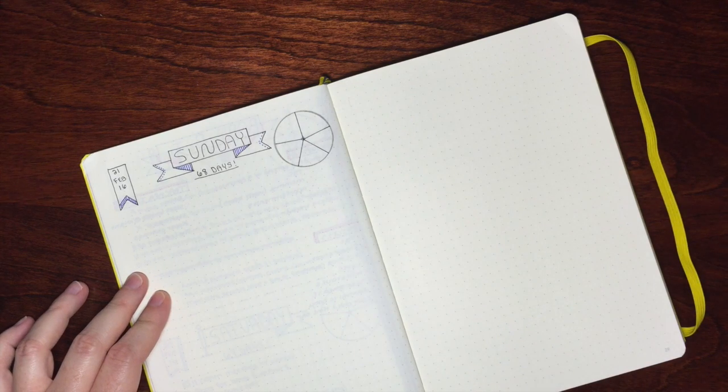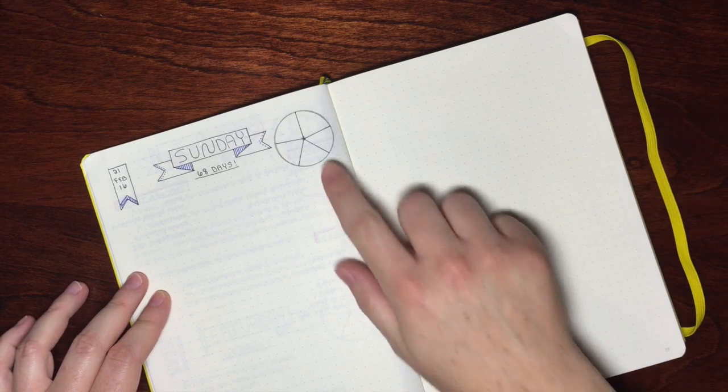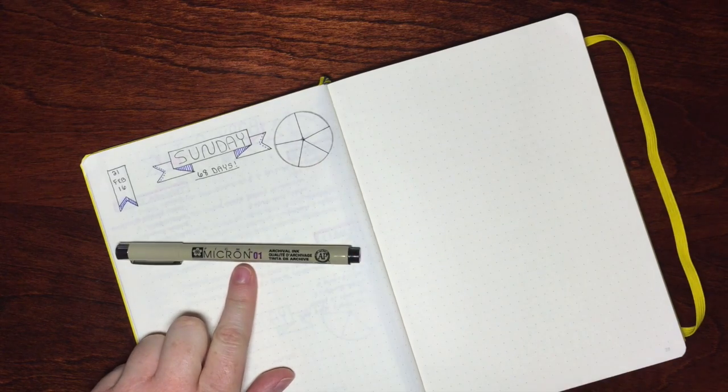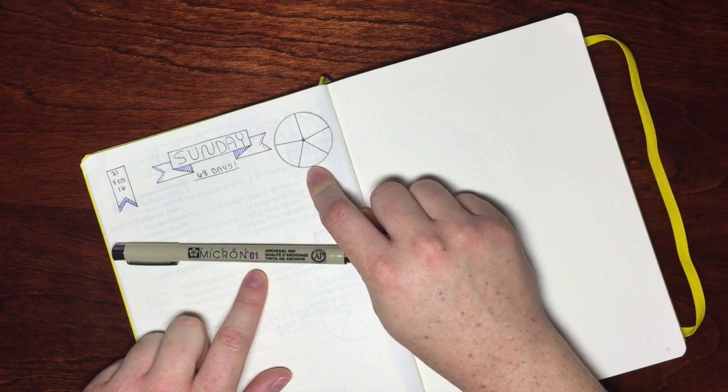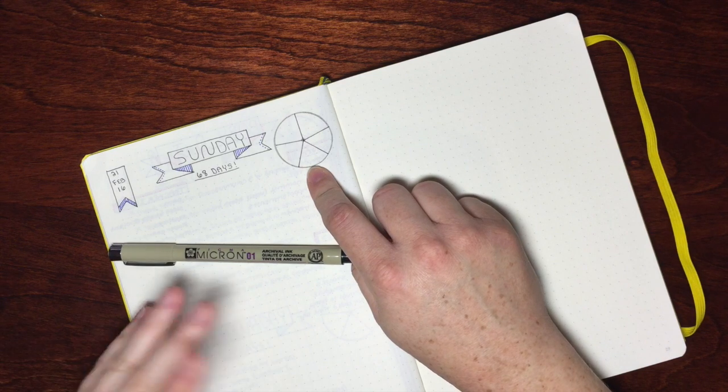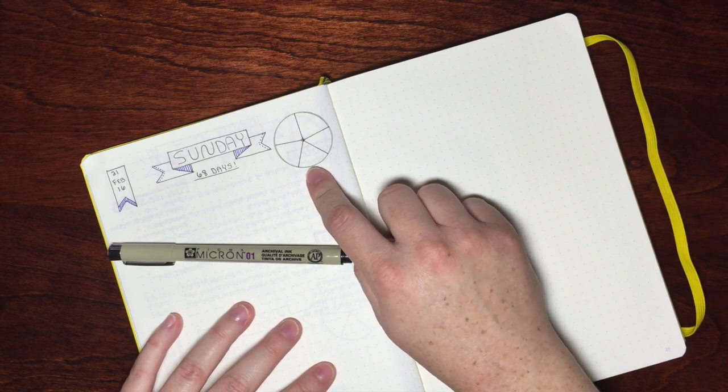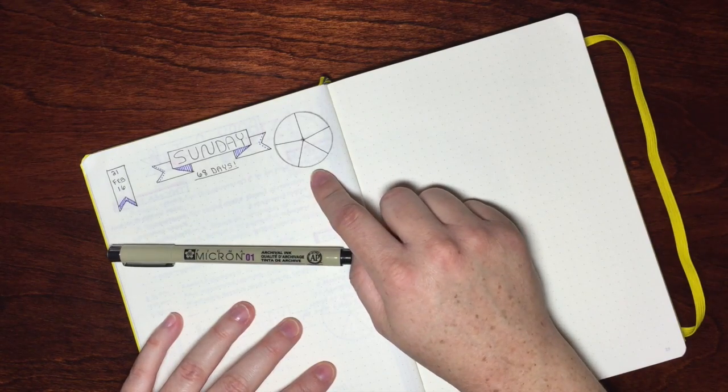Then I can use my clear ruler and my micron pens to draw on my lines. Now I measure these out by hand depending on how many different things you want to track in your radar chart. You can do your lines however you'd like in your pie chart.